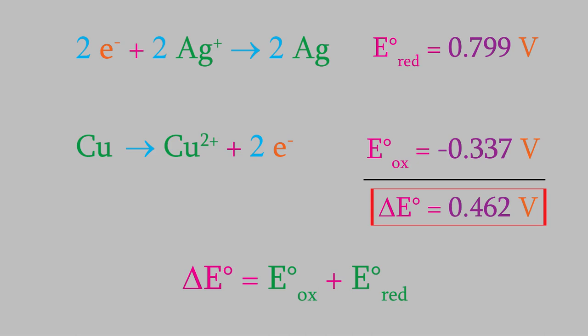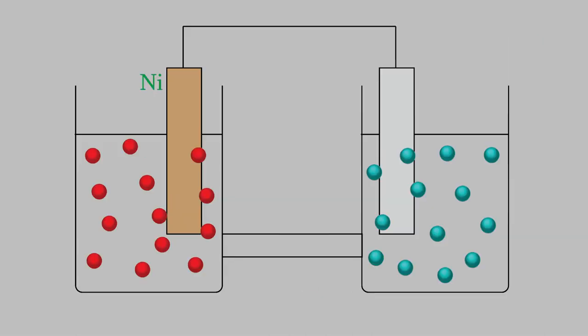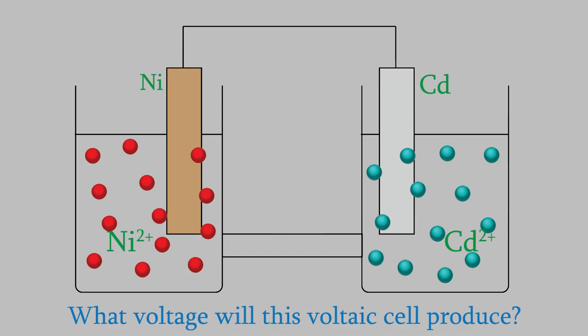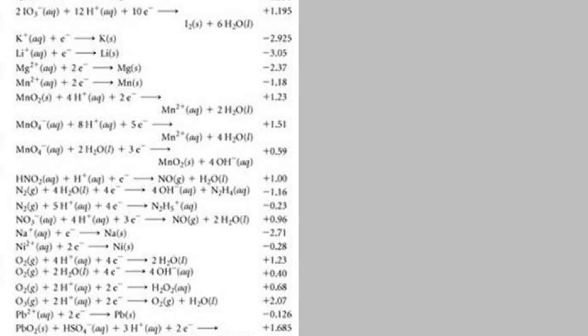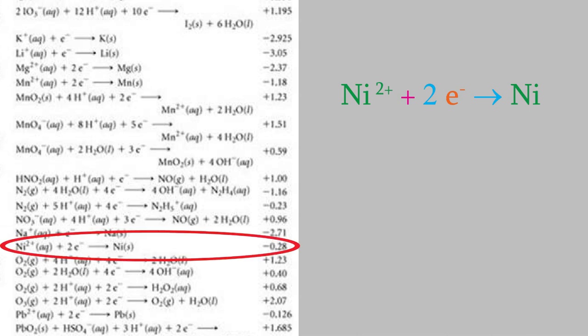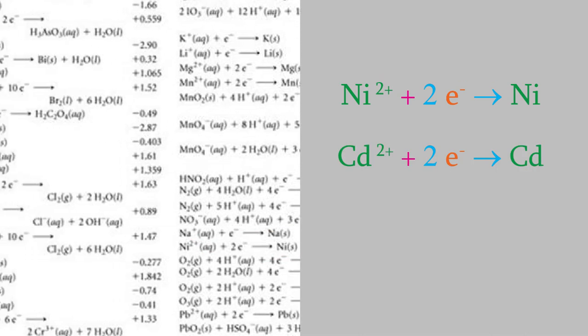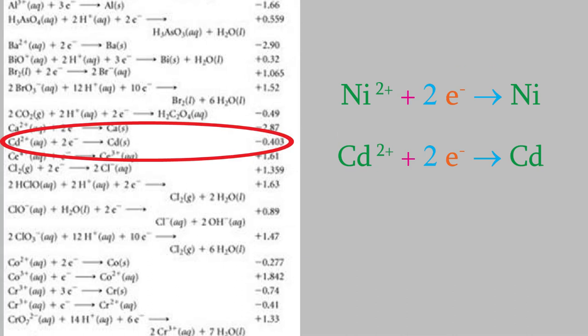For example, suppose we make a voltaic cell where the electrodes are nickel metal and cadmium metal, and the solutions contain nickel 2 ions. What will be the voltage of this reaction? To find out, we just need to look up the two half reactions in appendix E. When we do, we find out that the reaction where nickel ion reacts with two electrons to form nickel metal has a reduction potential of negative 0.28 volts. Meanwhile, the reaction where cadmium ion reacts with electrons to form cadmium metal has a reduction potential of negative 0.403 volts.